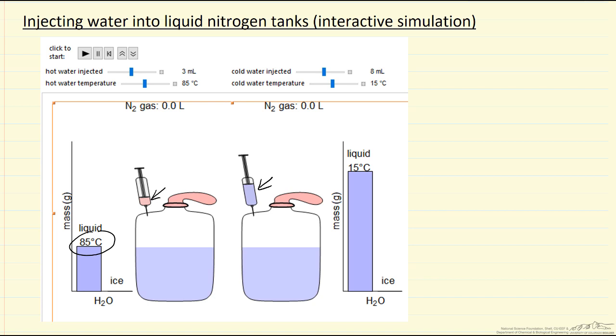And then the ice will cool down to liquid nitrogen temperature minus 196 degrees C. So the simulation allows you to adjust with these sliders the amount and the temperature of the hot water, and likewise the amount and the temperature of the cold water.